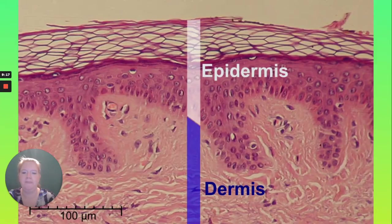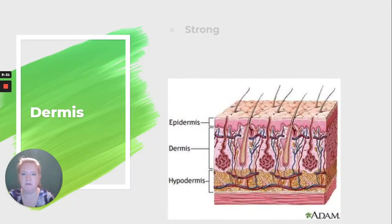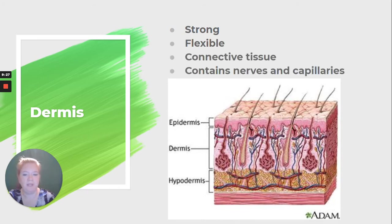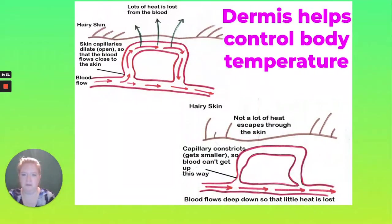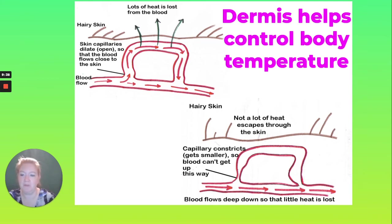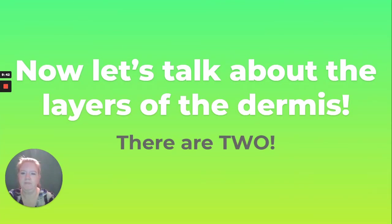Now let's move to the layer underneath — the dermis. Underneath the epidermis we have the dermis. It is strong, it is flexible, it is made of connective tissue, and it contains nerves and capillaries. The dermis helps to control body temperature by controlling the amount of blood flow into the capillaries.